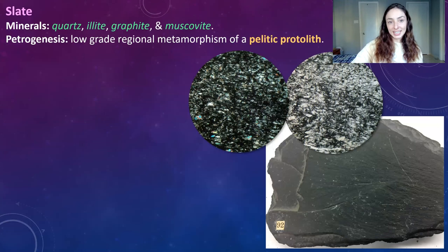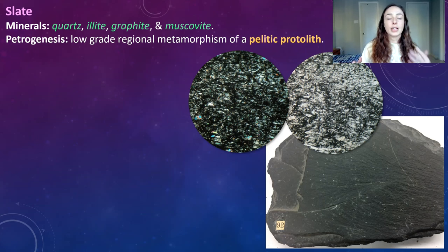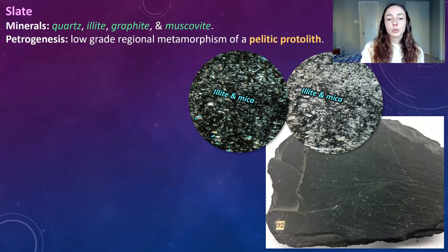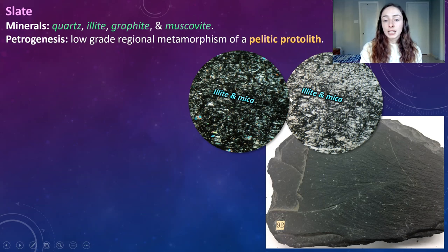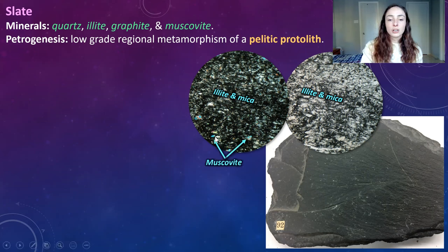Now we're moving on to slate. Slate is the metamorphic equivalent of a pelitic protolith — meaning like a muddy or clay-rich protolith like shale. It is the low-grade metamorphic equivalent, whereas the high-grade equivalent of shale would be either a phyllite or a schist. Slate includes minerals like illite and mica. In this mineral we can see it's mostly illite — a clay mineral that has not fully altered to muscovite yet. The thin section is dominated by platy fine-grained illite and some quartz. There are also some lighter platy minerals with interference colors indicative of minor muscovite.